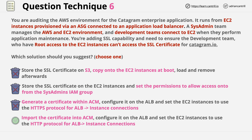So answer 4 is the right answer. This architecture is called SSL offload, where connections to the load balancer use HTTPS, and then connections from the load balancer to the instances use HTTP. It means that the instances don't need to use SSL certificates at all — it's less admin overhead, and it means that the SSL certificate can be tightly controlled.